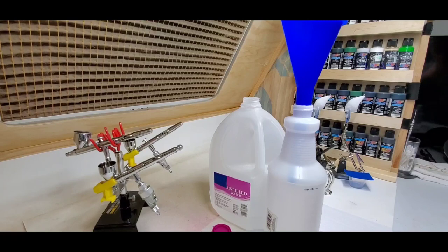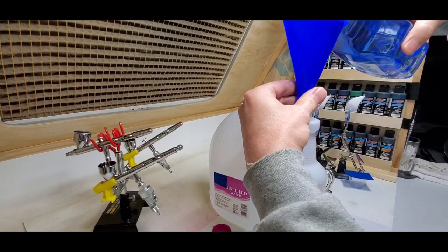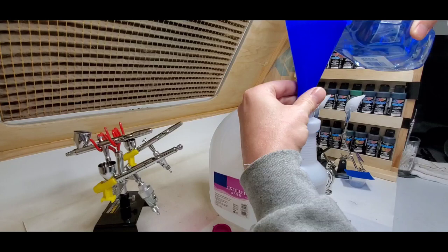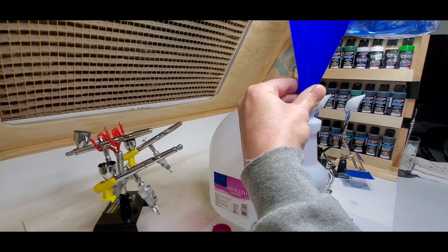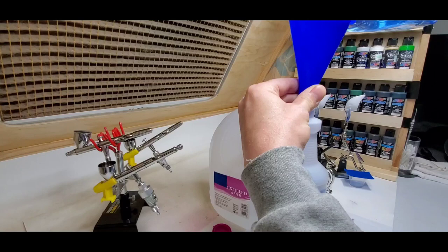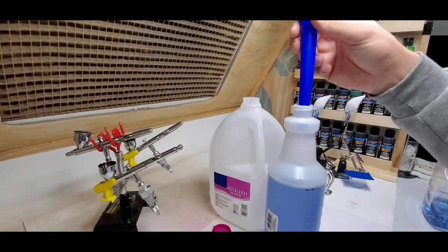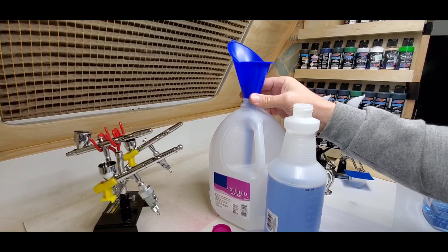And so we'll mix that up. 26 ounces. There's 26 ounces of that. Now if you want, you can do the full amount. You can go 32 ounces of alcohol, 32 ounces of window cleaner. But I find this works for me and I'm good to go.